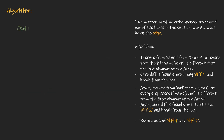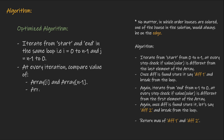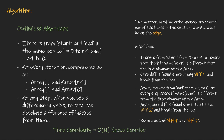We can further optimize this solution. The two iterations for diff1 and diff2 can actually be done in a single loop. We keep two variables i and j, where i iterates from 0 to n-1 and j iterates from n-1 to 0. At every iteration, we compare the value at i with the end of the array and the value at j with the start of the array. If at any step we find a difference, we return the absolute difference of the indexes. The time complexity is O(n) because we use a single loop, and the space complexity is O(1) — constant space.